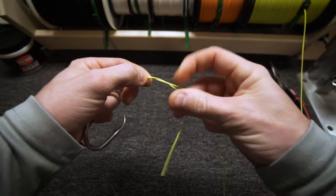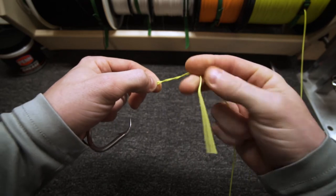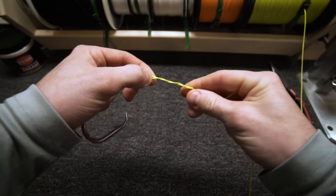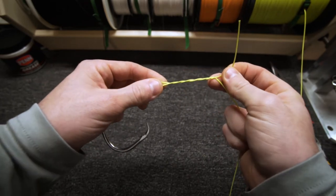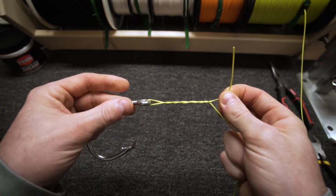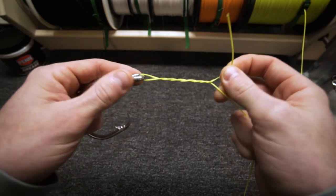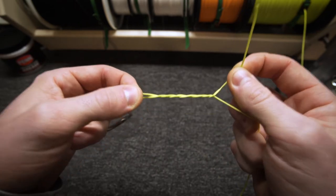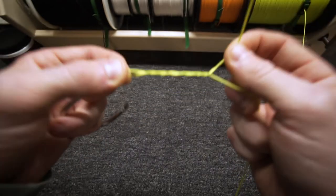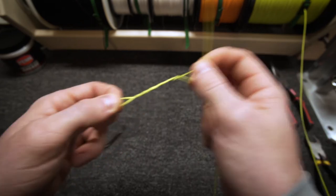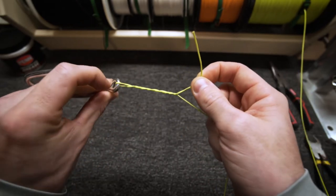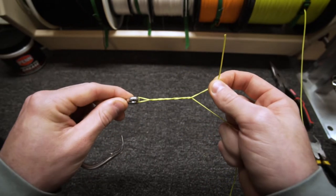The first question is usually going to be how many times do I twist it. This is what I don't see many people talk about. The amount of times that you twist it is based on the pound test of your line. The lower the pound, the more the twists. The higher the pound, the less twists are needed.